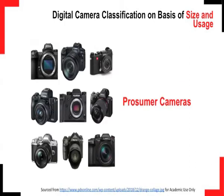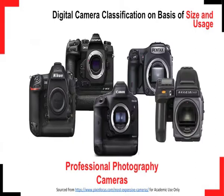Prosumer cameras are positioned by camera manufacturers to be used by enthusiasts, and they would usually allow you to change lenses and control exposure and other settings. Highest in the range are the professional cameras. They offer the highest quality and controls possible, but are usually expensive, bulky and heaviest.